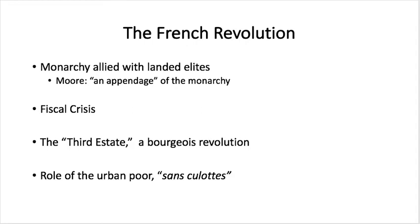Absolutism reaches its zenith under King Louis XIV, referred to as the Sun King, who ruled for about 70 years — his personal rule from 1648 to 1715. Most people think of absolutism as absolute power in the hands of the king, and that is true to a certain extent, but there's a specific social structure to it. Essentially, it took the structure of feudalism and nationalized it.